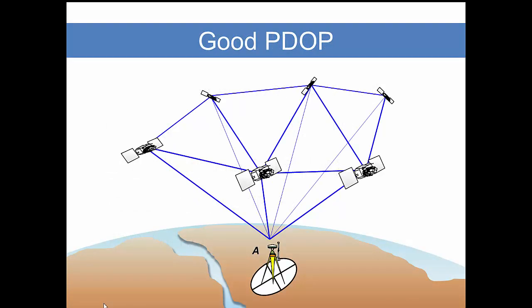Good positional dilution of precision occurs when satellites are scattered widely across the dome of the sky, some of them overhead, some near the horizon. I want you to think of a three-dimensional shape that is like a diamond, and the point of this diamond is at the receiver, and the top of the diamond is the multiple facets that you see here—triangular planes that connect groups of three satellites. When the volume of this diamond is high, then we have good positional dilution of precision.